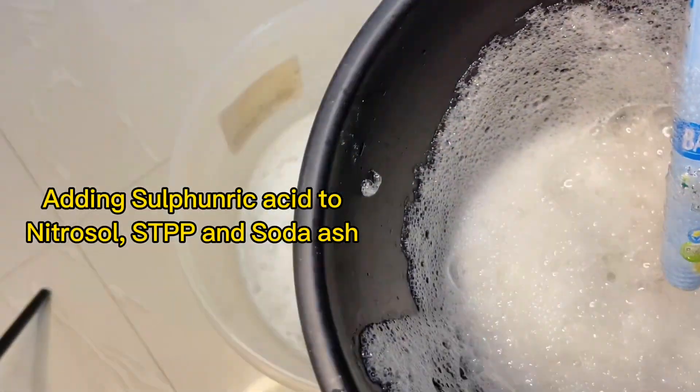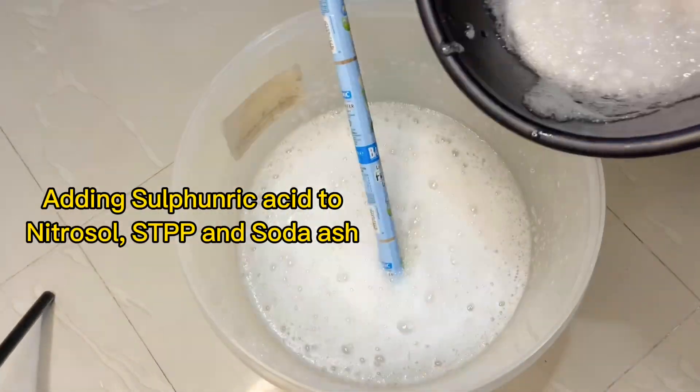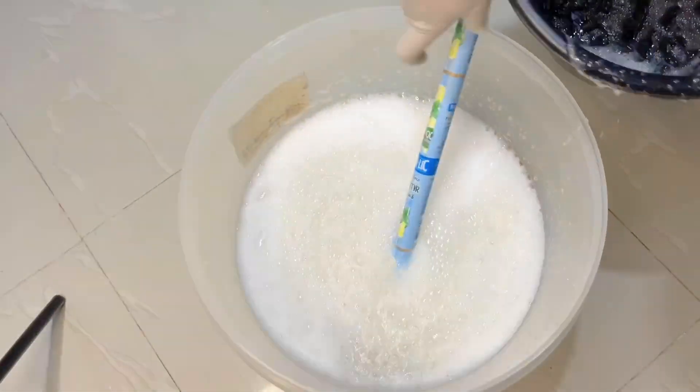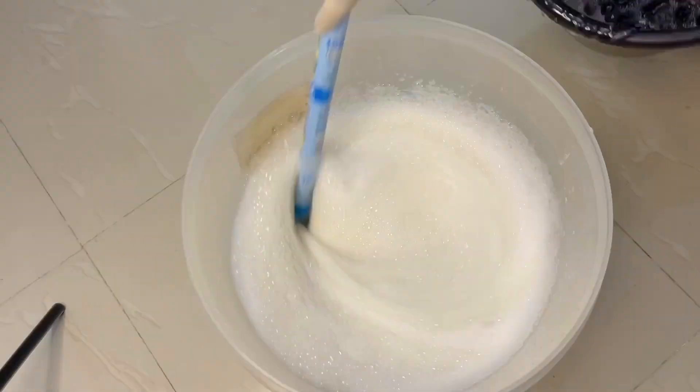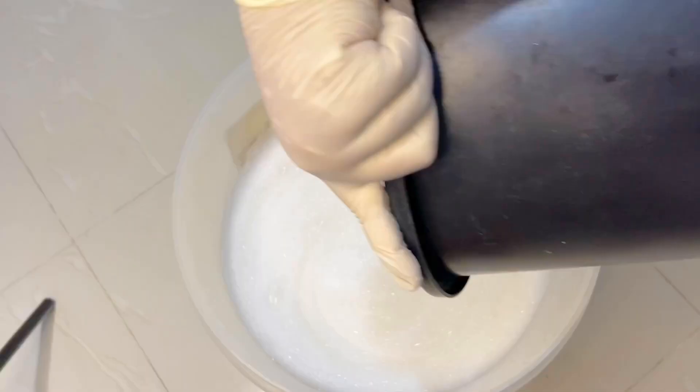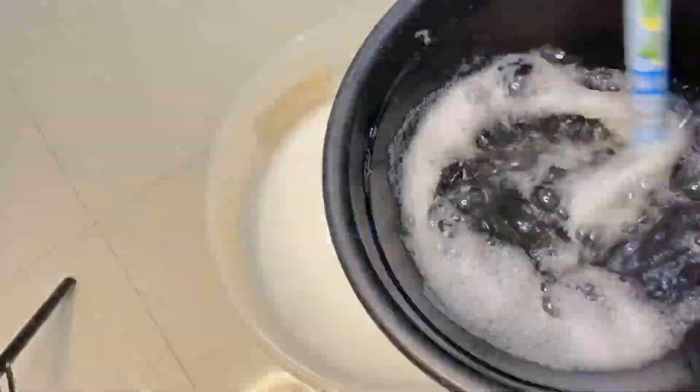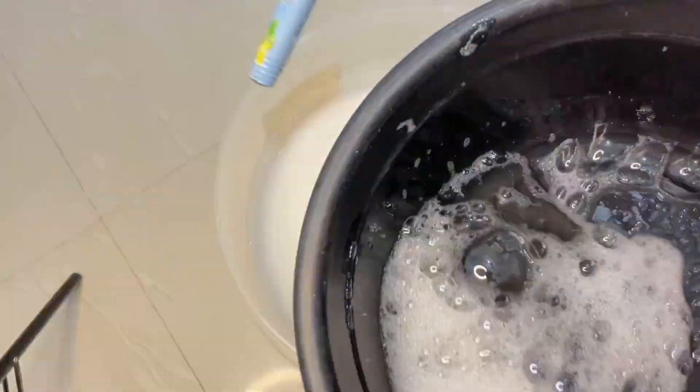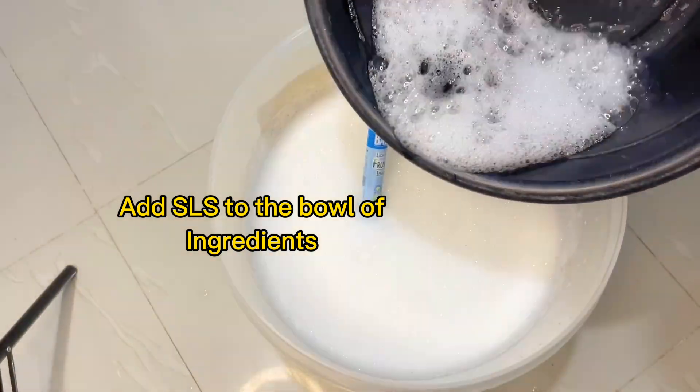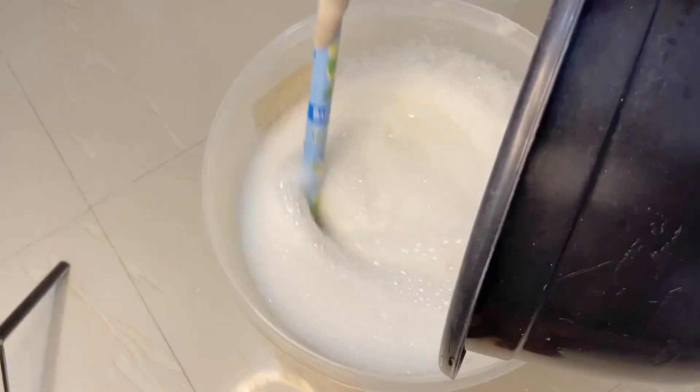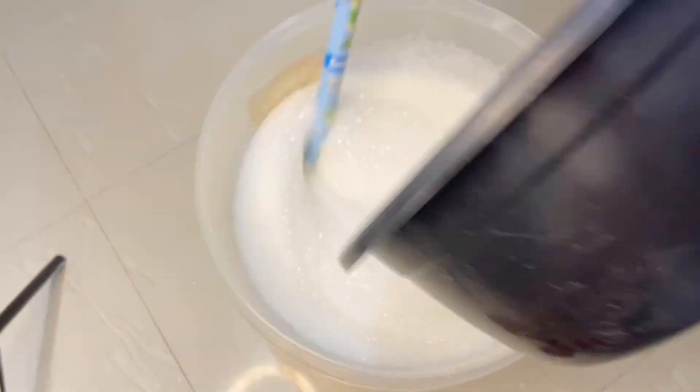Remember the sulfonic acid we mixed in water? It is now time to introduce it to our ingredients. Just look at the foam, look at the lather coming out of this. This is one sign to tell you that this soap is going to lather so, so much. Remember the SLS we soaked from the beginning of the video, the rice-like looking ingredient? It has now dissolved, so yeah, we just introduced it now to our liquid soap.